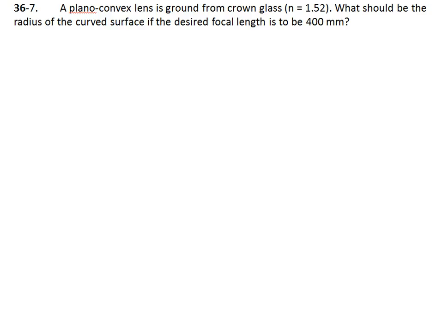We're told a plano-convex lens is ground from crown glass with a refractive index of 1.52. What should be the radius of the curved surface if the desired focal length is to be 400 mm?